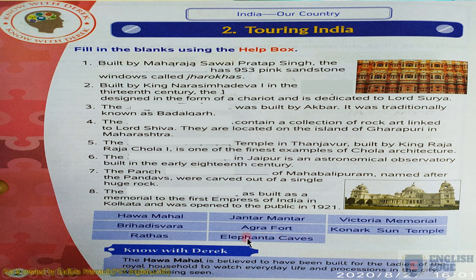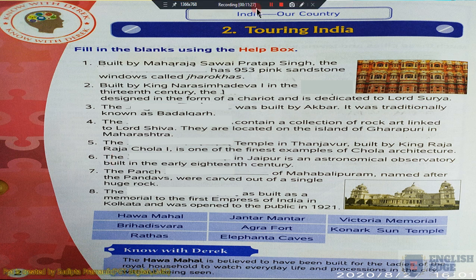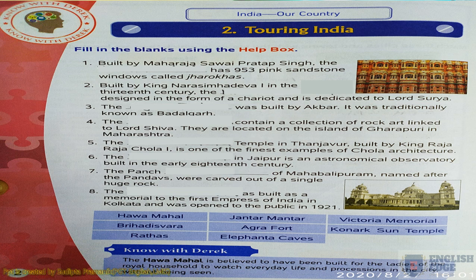Question five: the blank temple in Thanjavur, built by King Raja Raja Chola, is one of the finest examples of Chola architecture. The answer is Brihadishwara. Question six: the blank is in Jaipur - an astronomical observatory built in the early 18th century. The answer is Jantar Mantar.